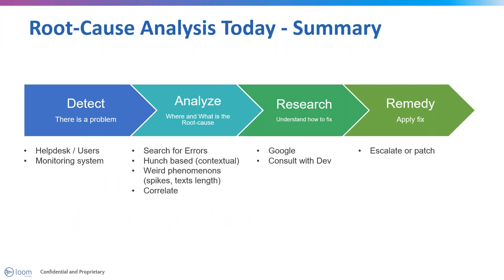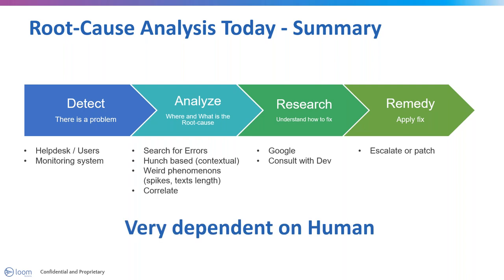We've talked about the three main phases of root cause analysis, each with its own conventions and approaches. The last phase is actually fixing the issue — whether by escalating to level 3 or 4 support or patching it yourself. We won't focus on that phase today since it's more about how to fix than finding the root cause. However, as things stand today, the root cause analysis process is very manual and dependent on the human being. With that in mind, let's discuss the second part of this webinar: how machines can help us in our daily jobs.